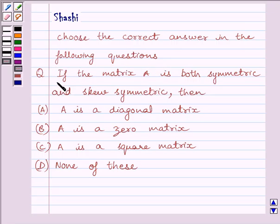The given question is: if the matrix A is both symmetric and skew symmetric then: A is a diagonal matrix, B part, A is a zero matrix, C part, A is a square matrix, D part, none of these. We have to choose the correct answer from A, B, C, D.